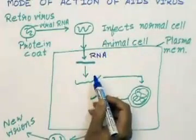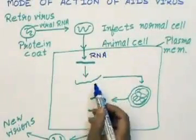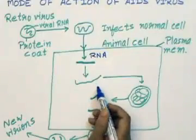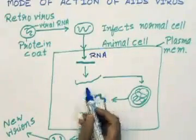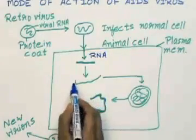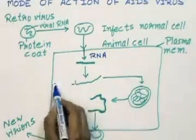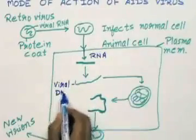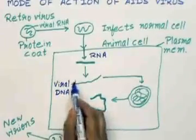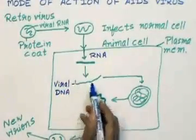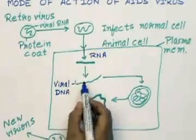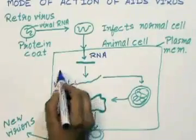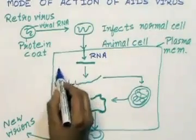With the help of the reverse transcriptase enzyme, viral DNA is produced. So the viral DNA is produced with the help of the enzyme reverse transcriptase.